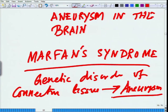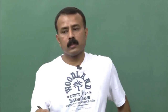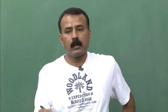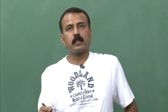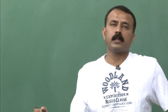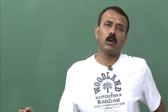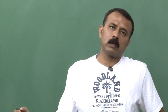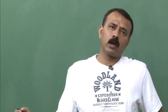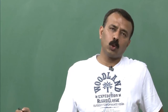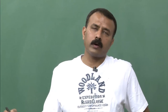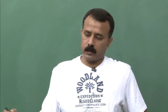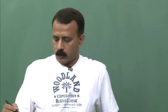Aneurysm in the brain can lead to hemorrhage, which is a very fatal situation. There are also genetic causes, such as Marfan syndrome — a genetic disorder of connective tissue that leads to aneurysm. Most aneurysms occur in the arteries due to weakening or clogging of specific parts.